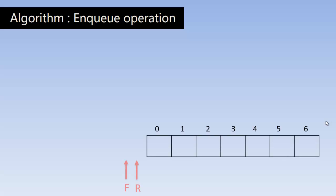This is our queue structure. Here we are representing the queue in the form of an array. F and R are two integer pointers always pointing to the two ends of the queue. F is for the front end where we remove elements, and R points to the rear end where we insert elements. Currently they are not pointing to any location because they are not initialized yet.